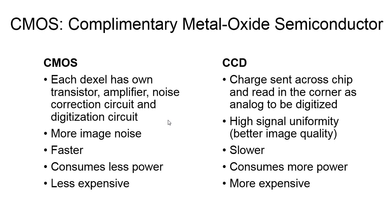For the CCD, the signal uniformity is very high, while all of the added electronics for the CMOS reduce the surface area for light capture, resulting in a higher amount of image noise. However, improvements in the 1990s to CMOS technology made it nearly equal to CCDs, and since the CMOS has a higher speed than the CCD, it only consumes about one hundredth of the power and can be manufactured less expensively.